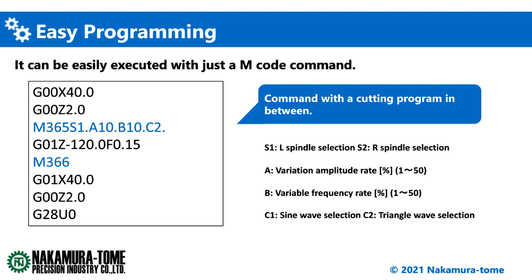I will also briefly explain the arguments. S is the argument for spindle selection: S1 selects the left spindle, and S2 selects the right spindle. A is the variation amplitude rate — it determines how wide the variation of the spindle speed will be. Basically, it should be set at 10. And if the chattering does not stop, you can increase this factor.